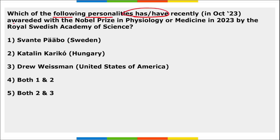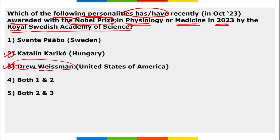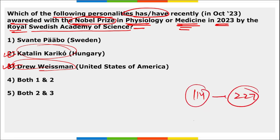Katalin Karikó and Drew Weissman were recently awarded the Nobel Prize in Physiology or Medicine 2023 by the Royal Swedish Academy of Science. This Nobel Prize in Physiology or Medicine has been awarded 114 times to 227 medicine laureates, among which 13 were women.